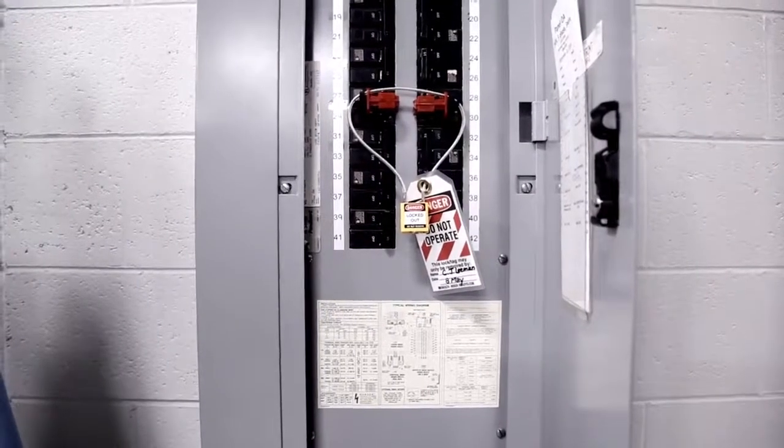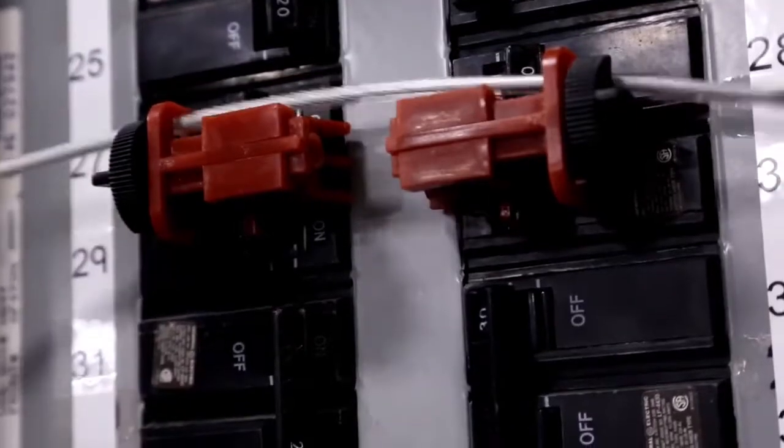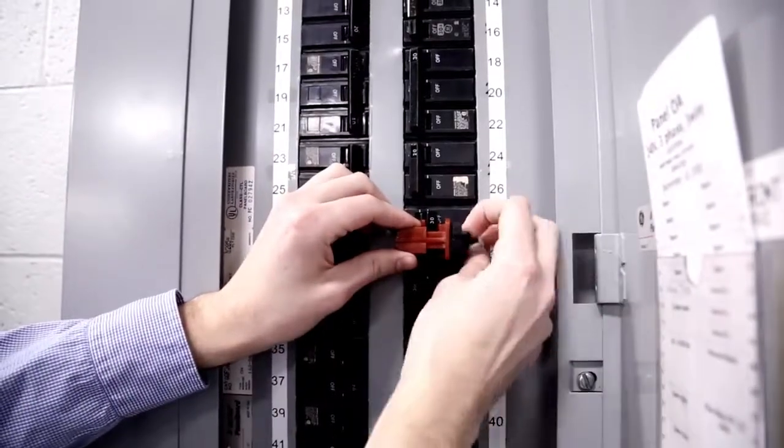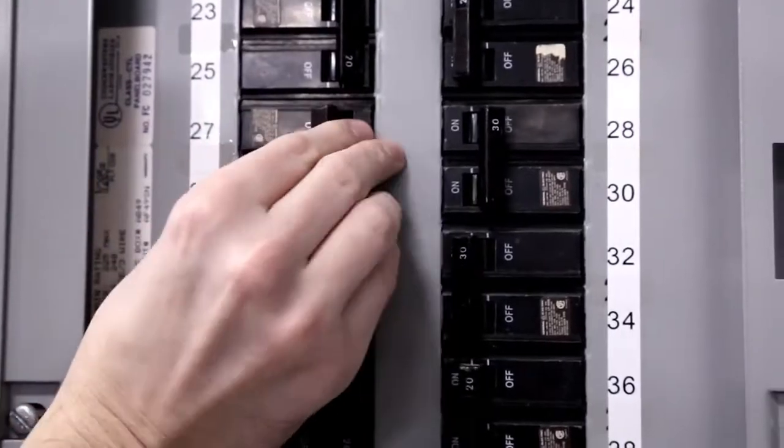To remove, unlock the device, remove the tag, padlock, and circuit breaker lockout device. The circuit breakers can now be moved to the on position.